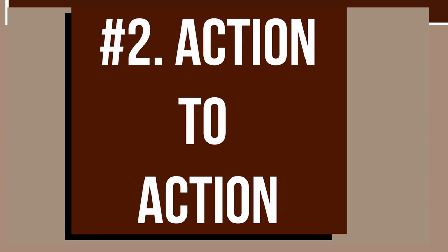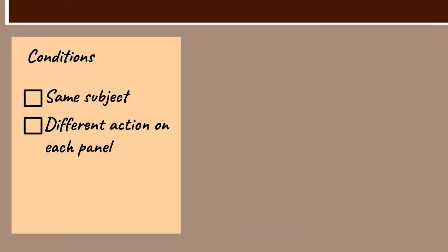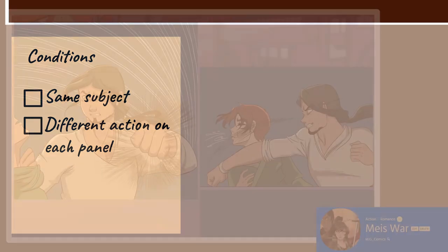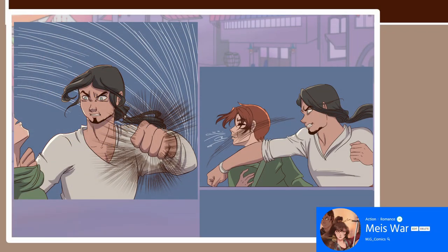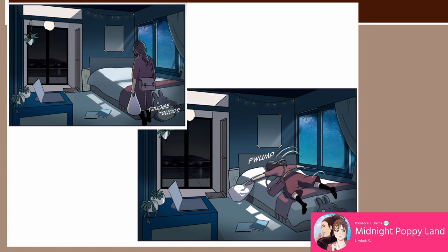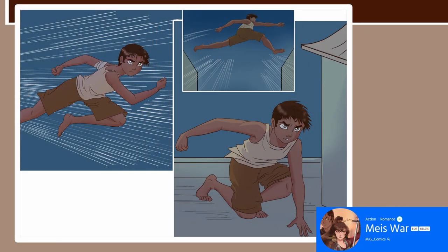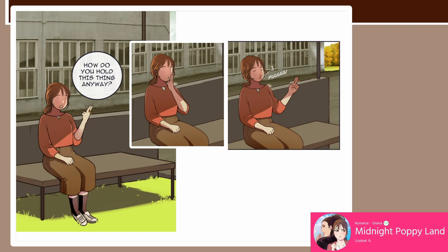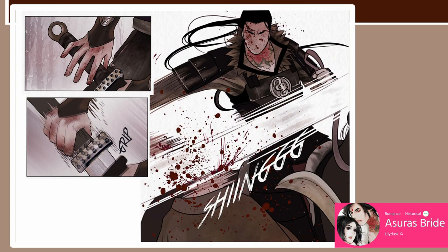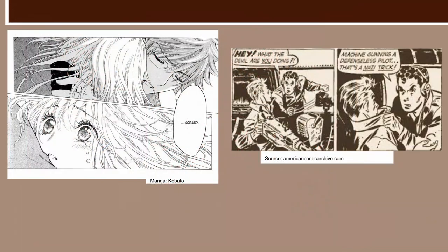Number 2: Action to Action. We have a single subject in this type of panel transition — whether it's a person, an animal, or a scenery — and we basically have one action in the first panel and a different action in the next one. For example, a bully ready to throw a punch to his victim, then actually punching him. Then Poppy getting home, walking slowly and tired, and throwing herself into bed. Ishida running, jumping between buildings, and landing with style — I would have landed horribly. Poppy trying to smoke unsuccessfully. And probably my favorite: Olan reaching for his sword, taking it out, and slicing his enemy's head.